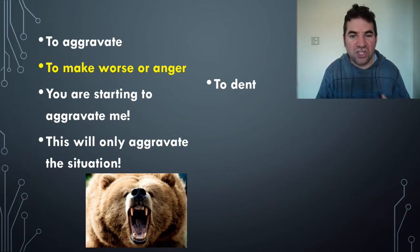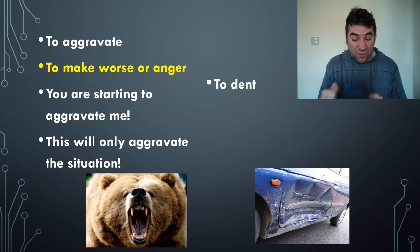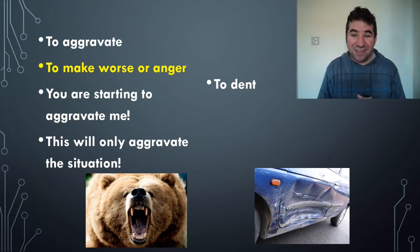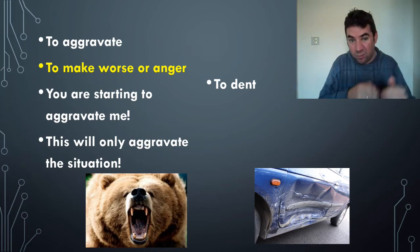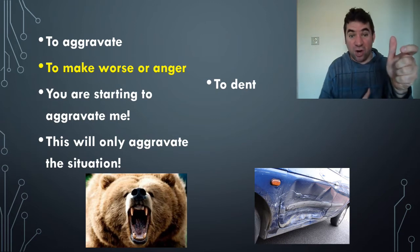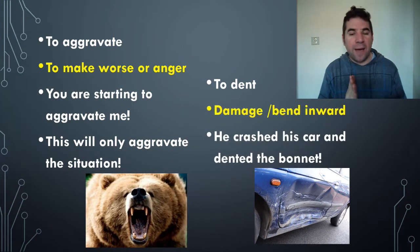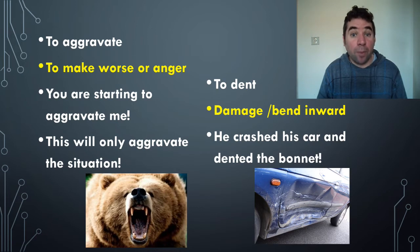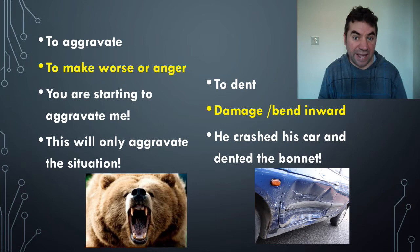To dent — if something is dented, it is usually damaged. Maybe you receive a box in the post and it is dented. Also, if you're driving and someone hits you or you hit someone else, chances are your car is going to be dented — the metal is bent inwards. To dent means to damage or bend inwards. Example: he crashed his car and dented the bonnet — the front part of the car that protects the engine.